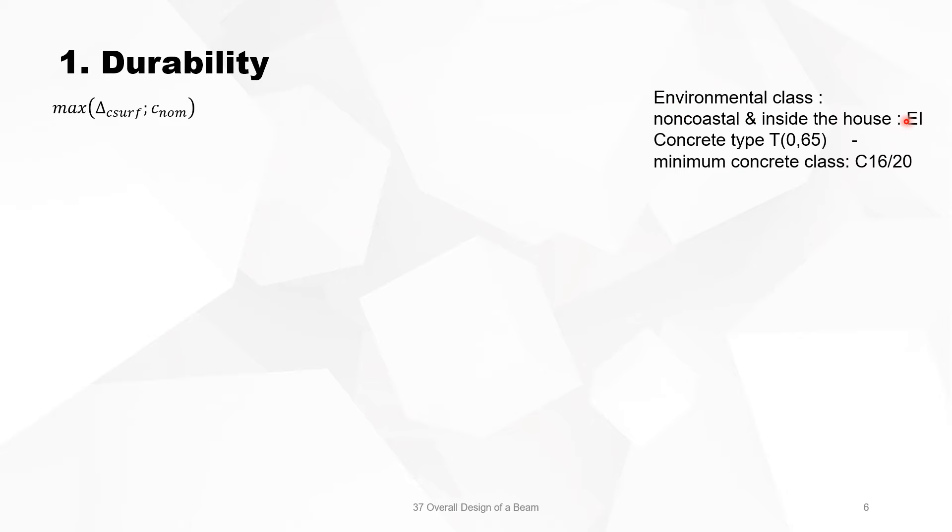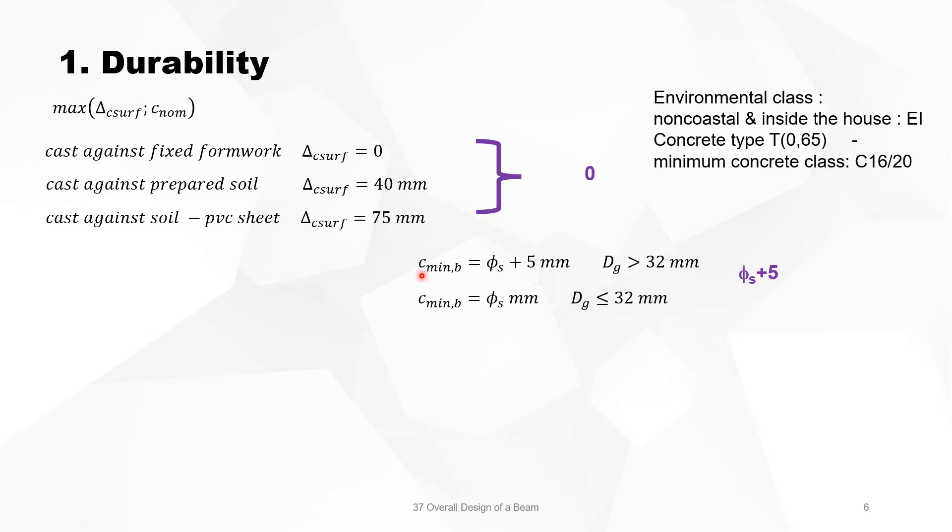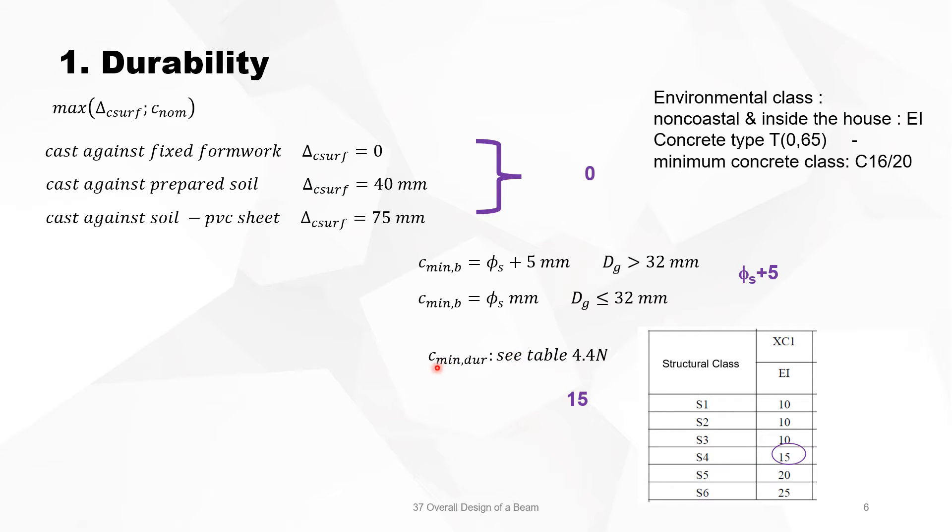From the environmental class, we will now calculate the needed concrete cover, which is the maximum of those two terms. The beam is cast against fixed formwork, so the element delta C surface is 0. Then we concentrate on C_min,B. We don't know what the maximum grain size is. If we don't know, we take the maximum, so we take Vs plus 5. C_min,dur, the required minimum concrete cover, we know that for a house the structural class is S4, we are in environment class EI, so the minimum is 15 millimeters.